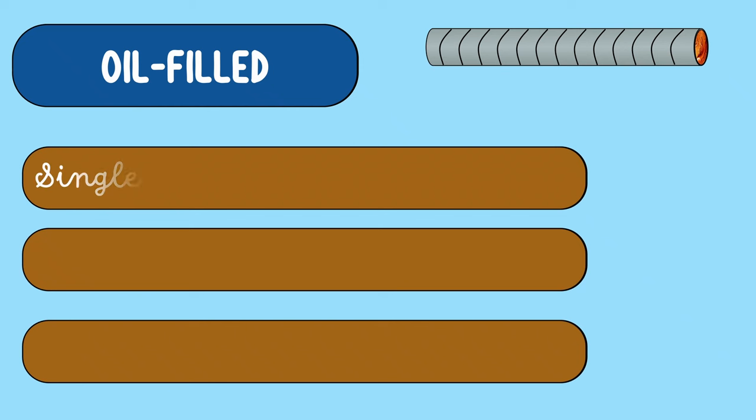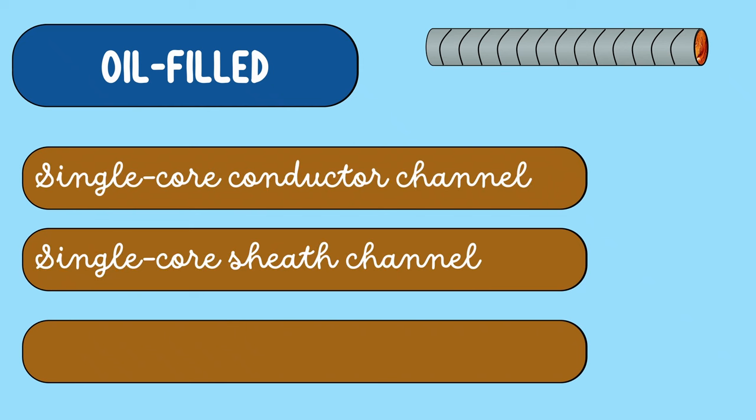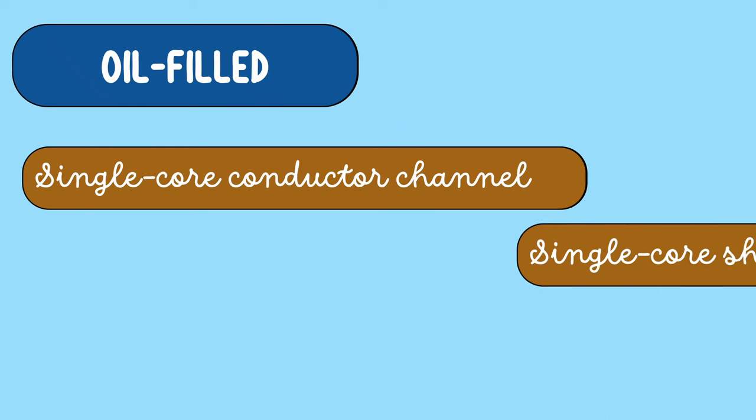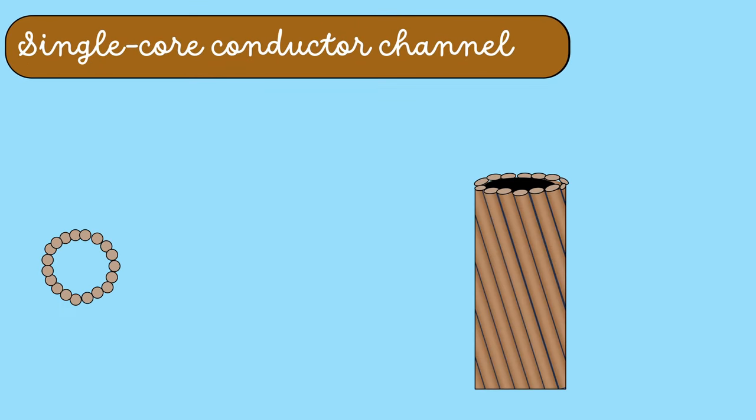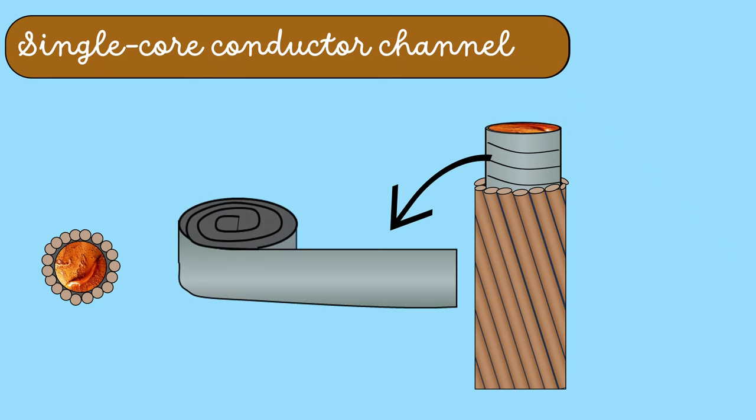Single-core conductor channel, single-core sheath channel, and three-core filler space channel. As the name indicates, a single-core conductor channel has one core. In this case, the strands of the core are arranged in such a way that it gives a hollow cylinder structure. Oil is present at the center surrounded by steel spiral tape.